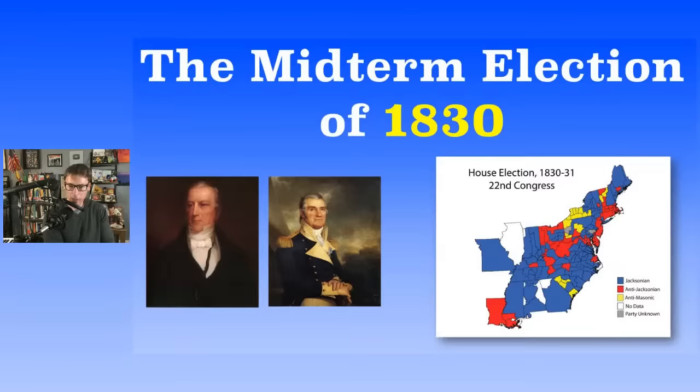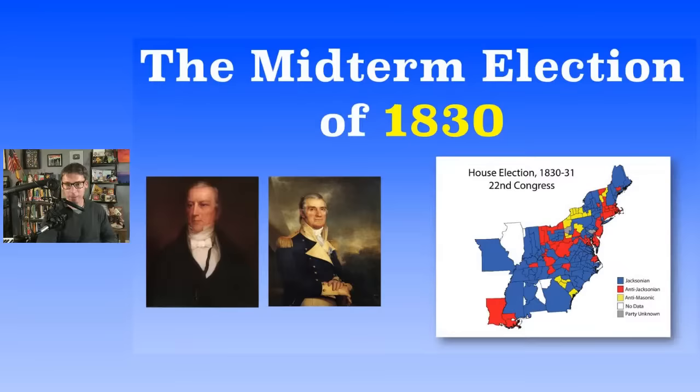In the Senate, there were 48 seats; 25 were needed for a majority. The Democrats or Jacksonians picked up one seat — they had 25 before, now had 26. A slim majority. The anti-Jacksonians lost three seats, only having 20. And we get our first third-party senator in American history — from the nullifier party, Robert Hayne from South Carolina.